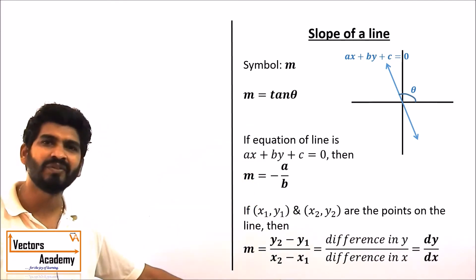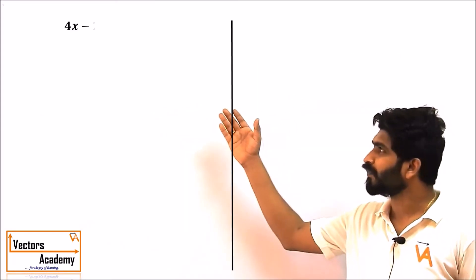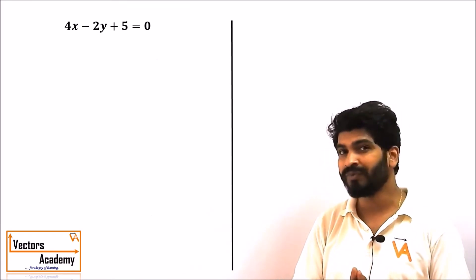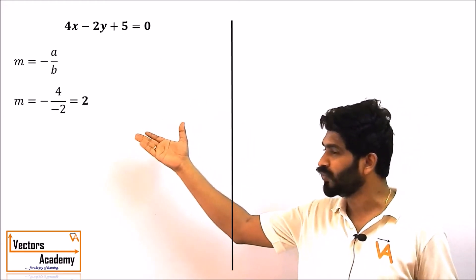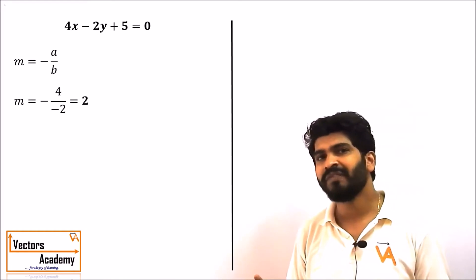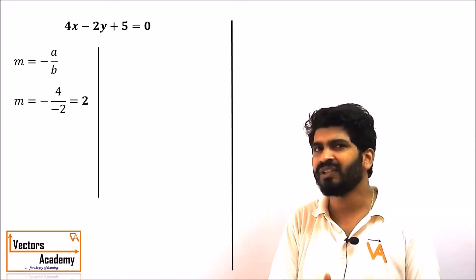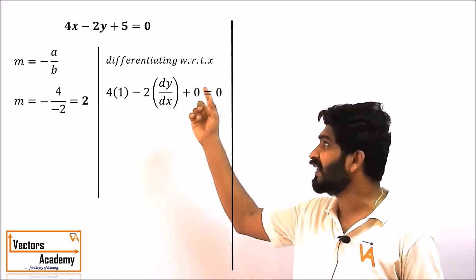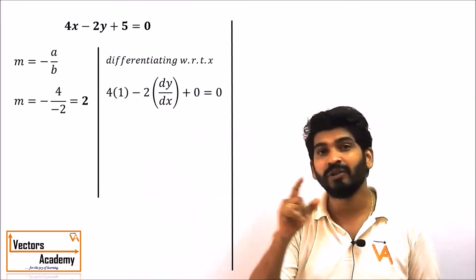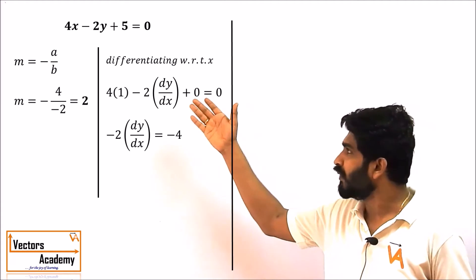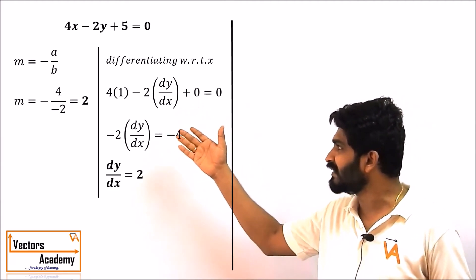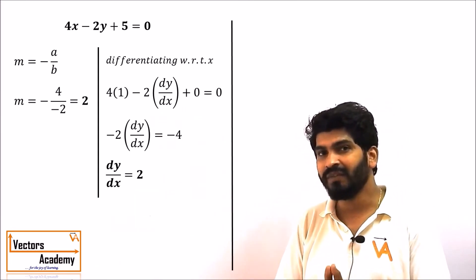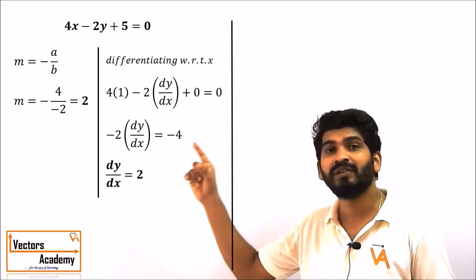Let us verify this concept using a simple equation of a straight line: 4x − 2y + 5 = 0. The slope is −a/b = 2. Now let us verify this using derivatives. Differentiating with respect to x — remember the derivative of x is 1 and the derivative of y is dy/dx, also written as y′ — we get dy/dx = 2, which is exactly the slope. So the derivative of an equation gives you the slope of the equation.